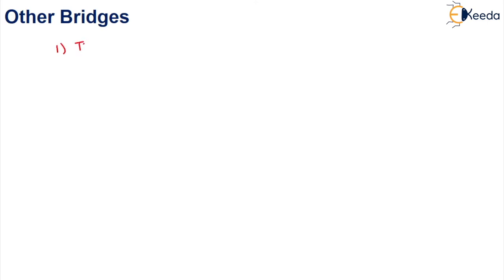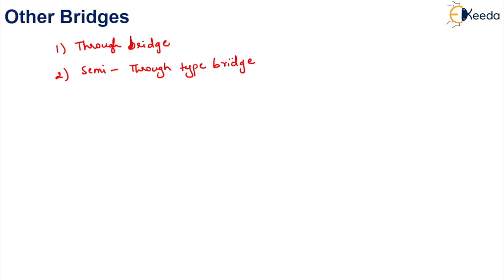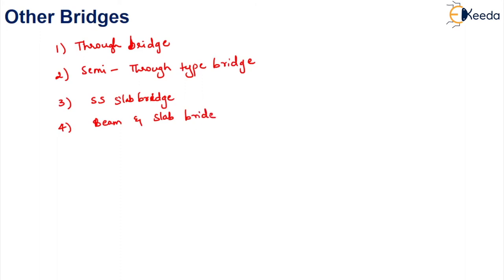There are other types which come under structural appearance. The first is your through bridge — throughout your bridge, the vehicle can pass, so that type is called a through bridge. The second type is your semi-through bridge — half of the bridge will be below the deck level and half above the deck level. The next type is your simply supported slab bridge, where the bridge is simply supported on both sides. Then there is your beam and slab bridge, where you will have both beams and slabs to construct the bridge structure.